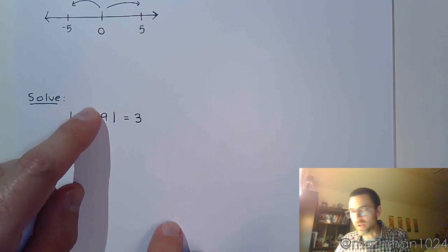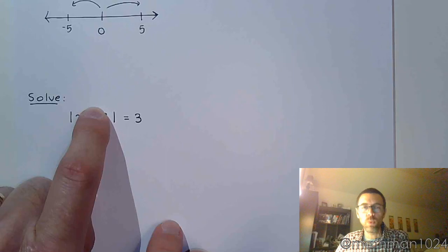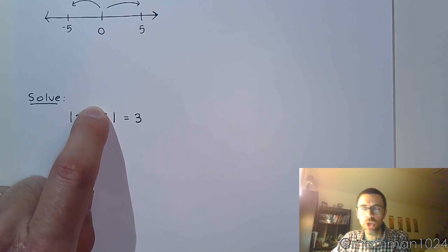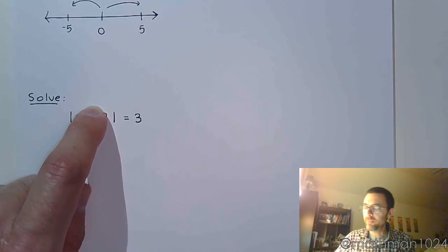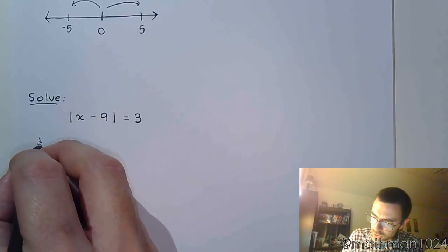So when will the absolute value equal three? Well, I like to think about it this way. If I cover this up, what could be inside the absolute value? What number would have an absolute value of three? There are two numbers. Three would work, and also negative three. And so that leads us to our two equations to solve.